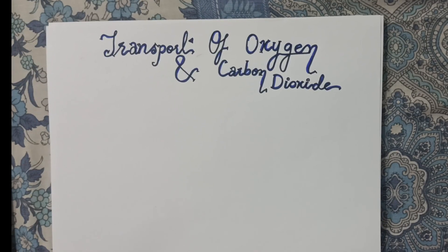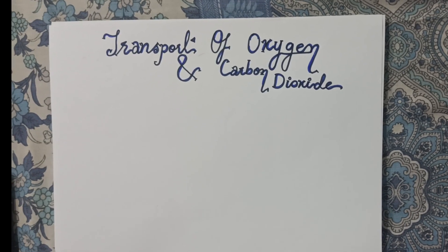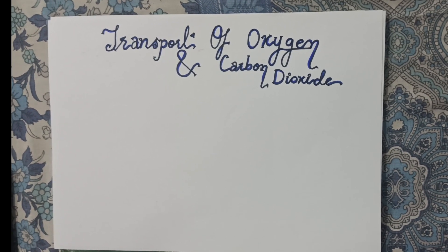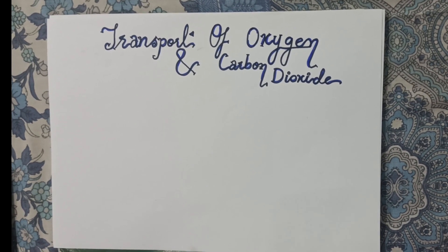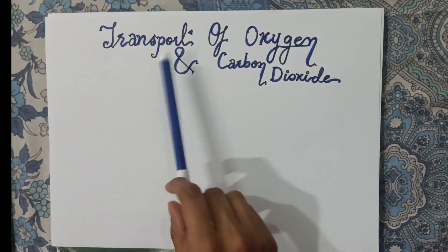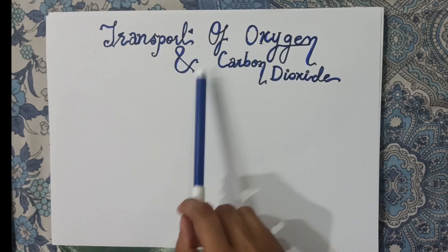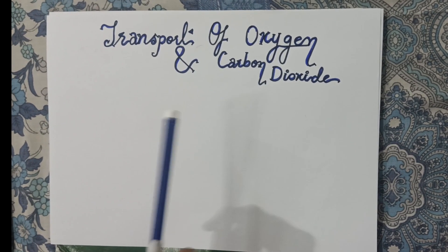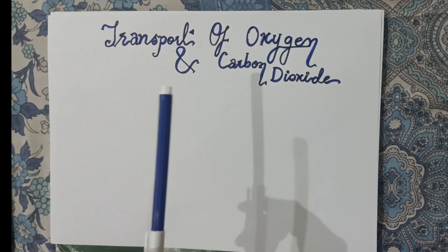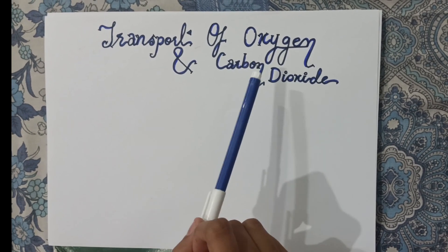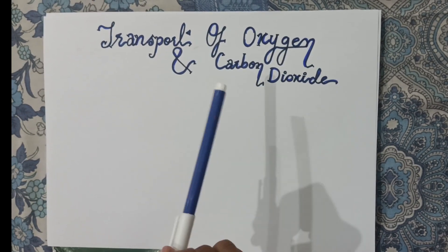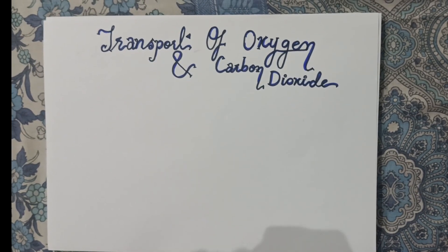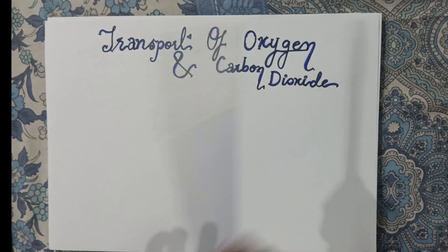Assalamu alaikum everyone and welcome to my YouTube channel Study with Hatija. I am Hatija and today we will be discussing chapter number 14, Respiration — specifically the topic of transport of oxygen and carbon dioxide in the blood. In today's video lecture, we will see how much oxygen and carbon dioxide travel in our blood and how much reaches our tissues. So let's start with the transport of oxygen.